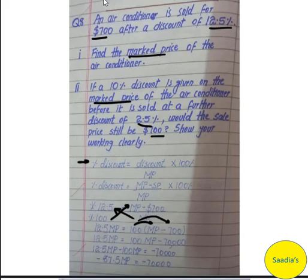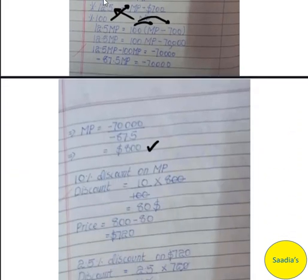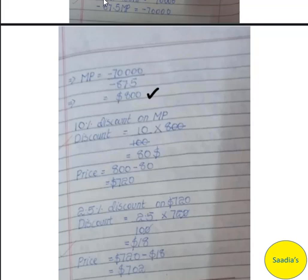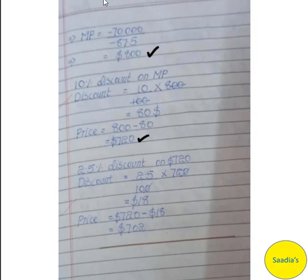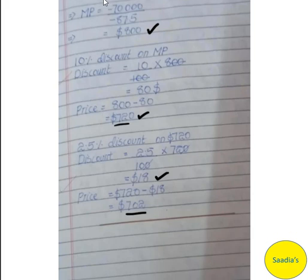With a single 12.5% discount the answer was $700. But with successive discounts — first 10%, then 2.5% — the results differ. On mark price of $800, 10% discount gives $80 off, leaving $720. Then 2.5% of $720 is $18, leaving $702. So the final price is $702, not $700. Therefore successive percentage discounts are not the same as a single combined discount.